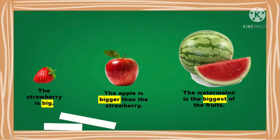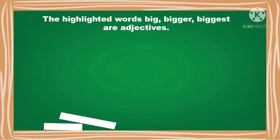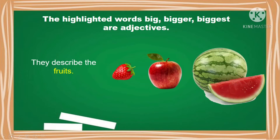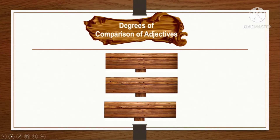What do you call the highlighted words in the sentences? The highlighted words — big, bigger, biggest — are adjectives. Adjectives can be used to compare things. There are three degrees of comparison of adjectives.